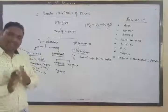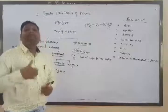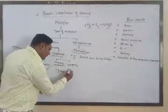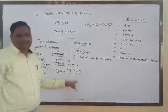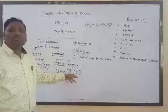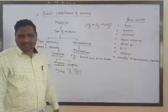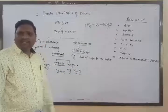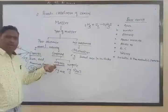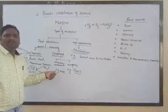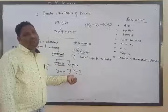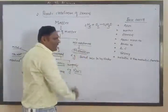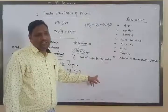An inorganic compound is obtained from minerals — from non-living things such as water, air, and soil. So organic compounds come from living things and inorganic compounds come from non-living things such as minerals.